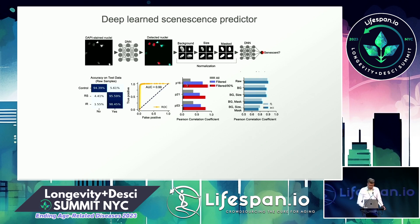We get good correlation with known senescent markers. Importantly, we can normalize the data — cutting out small pieces of the nuclei, removing the background, size-normalizing them, and even removing the entire internal part of the nucleus and looking only at the outline. Even with just the outline, we still get a very strong predictor of senescence.